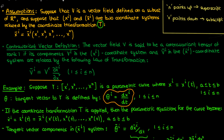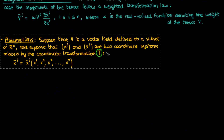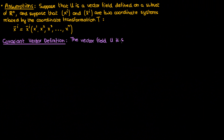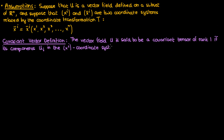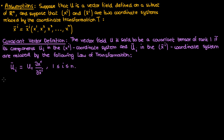Now let's talk about covariant vectors. The same assumptions with the vector field and the coordinate transformation apply as the ones we used for contravariant vectors. One thing to note now is that we're using a different vector field u. This vector field u is said to be a covariant tensor of rank 1 — so a covariant vector — if its components u sub i in the xi coordinate system and u sub i bar in the xi bar coordinate system are related by the following law of transformation: u sub i bar equals u sub r times the partial derivative of xr with respect to xi bar. Again, r is the dummy index on the right-hand side, so r is being summed over from 1 to n on the right.